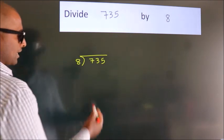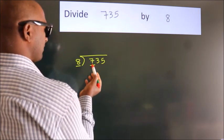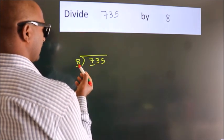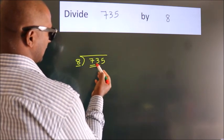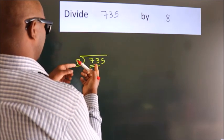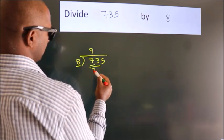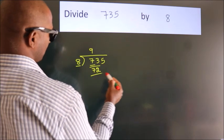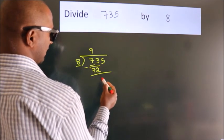Next, here we have 7, here 8. 7 is smaller than 8, so we should take two numbers, 73. A number close to 73 in 8 table is 8 nines 72. Now we subtract, we get 1.